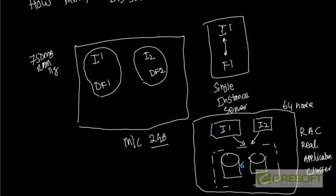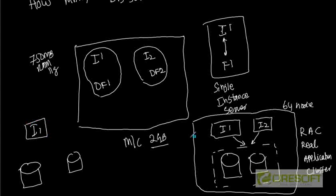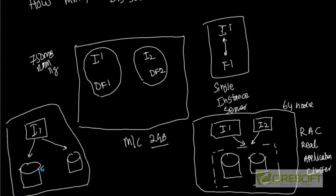You can ask how many instances can be in a RAC — it depends. I have seen 64-node RAC configurations, meaning 64 instances all attached to a single database file system. However, the reverse — having one instance attached to multiple database file systems — is not possible, because database properties like atomicity and consistency cannot be maintained across multiple database file systems with a single instance.